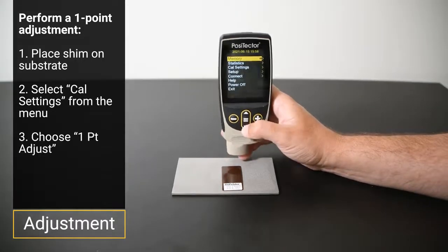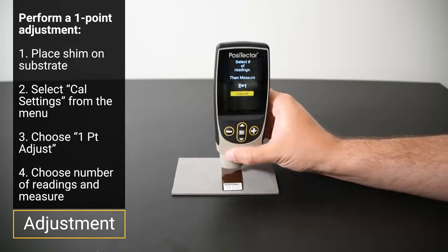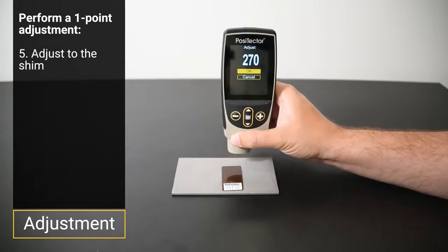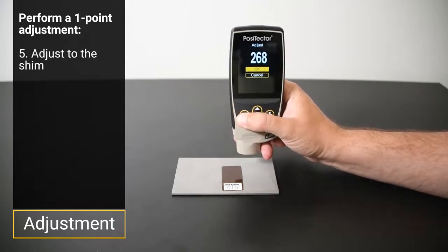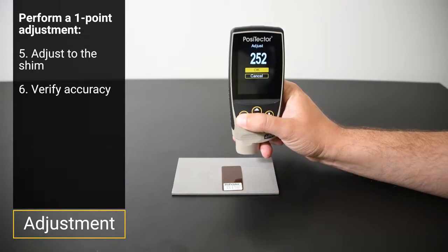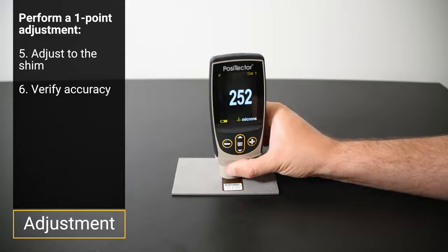Select Cal settings, then one point adjustment. Choose the number of readings and then measure over the shim following the on-screen prompts. The measurement average will be displayed. Use the plus or minus buttons to adjust the thickness of the shim. When completed, verify that the instrument measures within tolerance of the shim thickness.